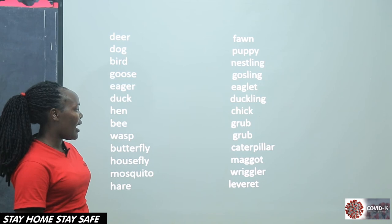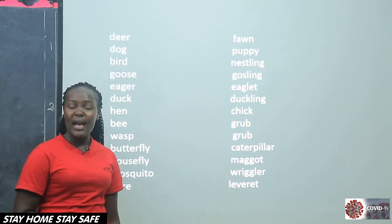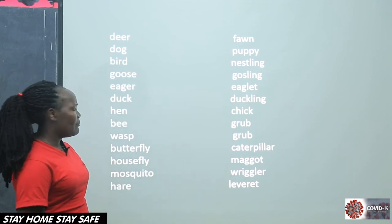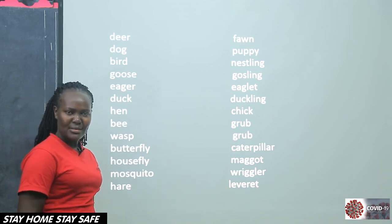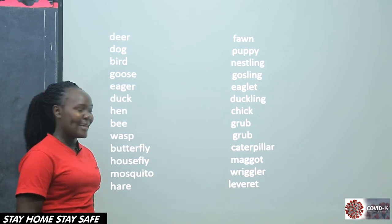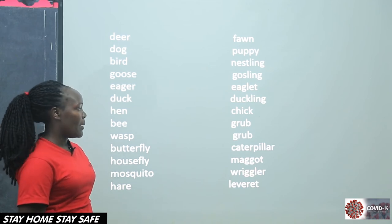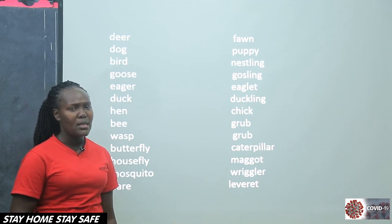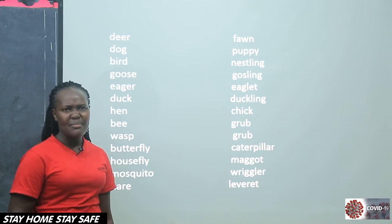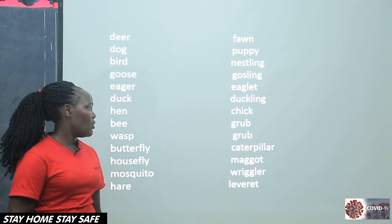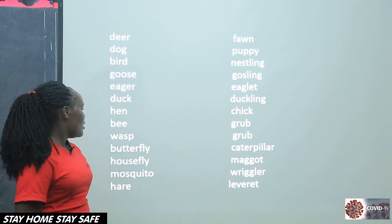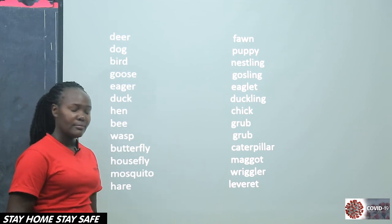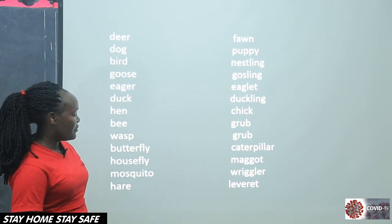When it comes to the butterfly, the young one is a caterpillar. Many of you have ever come across caterpillars and you fear them — they are scary. A housefly — maggots. You know very well where you find the maggots: in toilets. They don't look good. Wherever you see them, know that there is something wrong — something rotten or unclean. We have the mosquito — it has the wiggler. The hare — leverets.